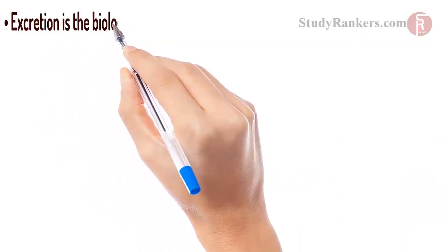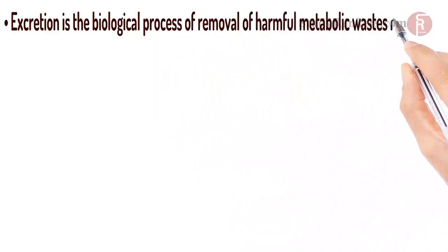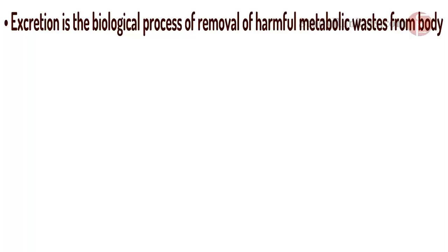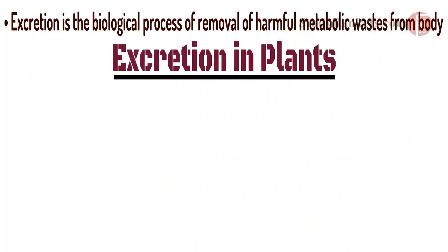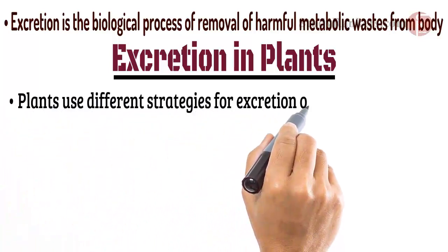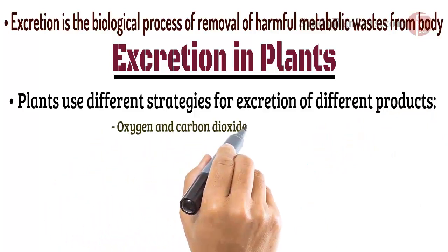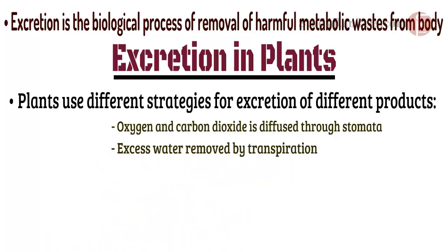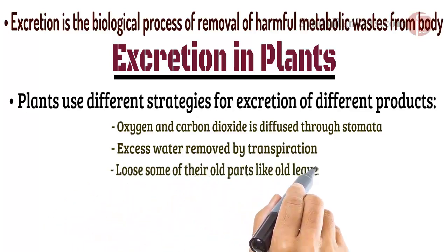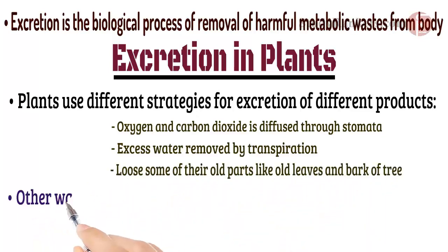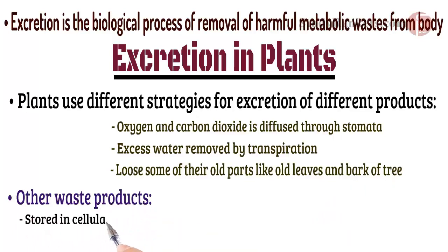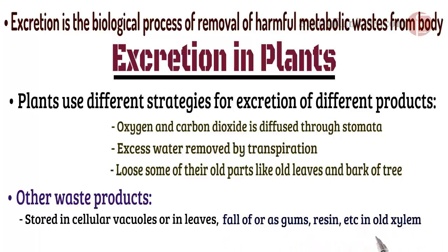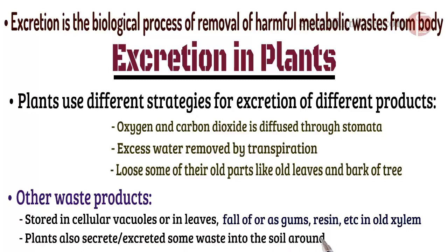Excretion is the biological process of removal of harmful metabolic waste from the body. Plants use different strategies for excretion of different products. Oxygen and carbon dioxide are diffused through stomata. Excess water is removed by transpiration. Plants can even lose some of their old parts like old leaves, crops and bark of tree. Other waste products are stored in cellular vacuoles or in leaves which fall off, like resins and gums especially in old xylem cells. Plants also secrete or excrete some waste substances into the soil around them.